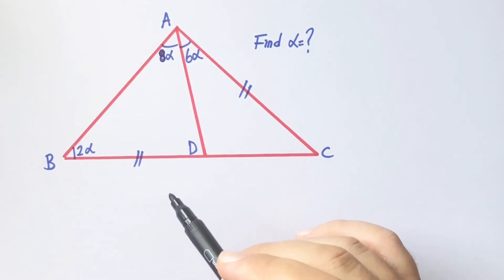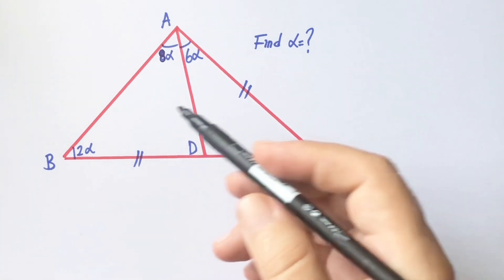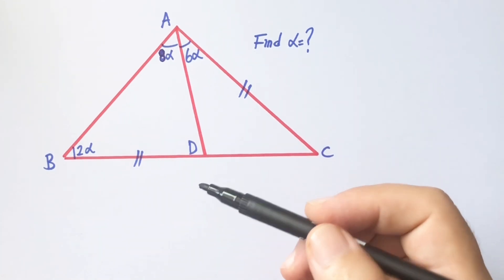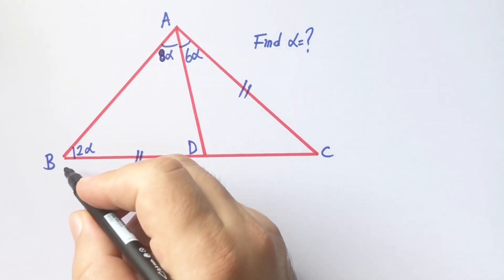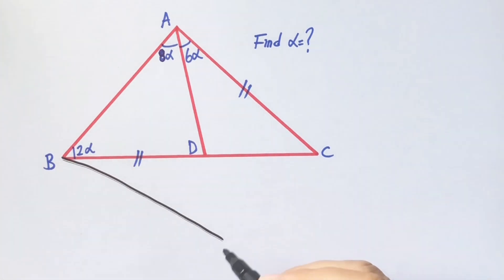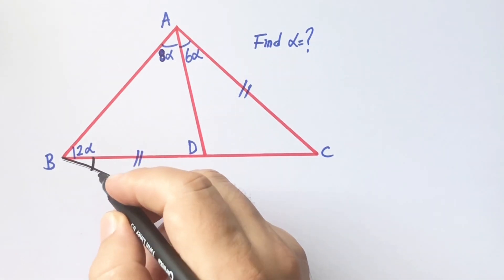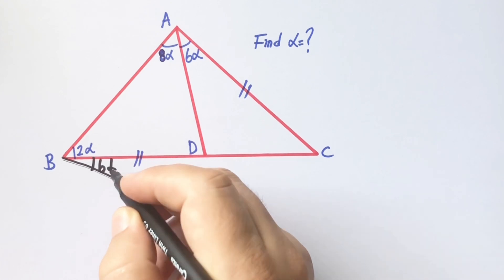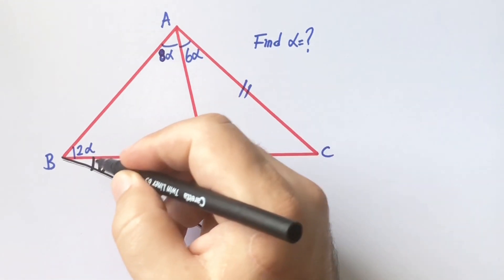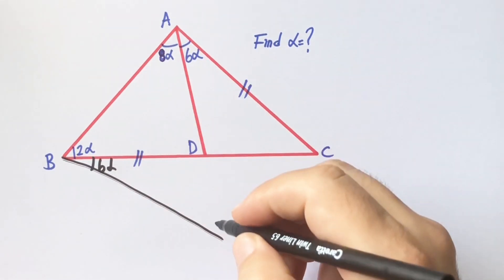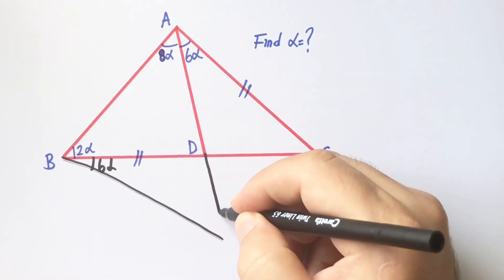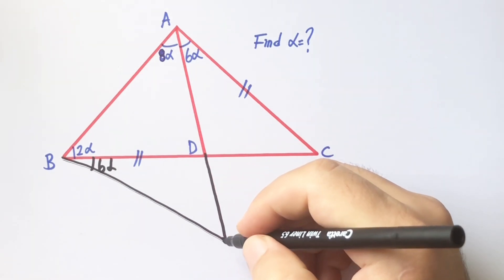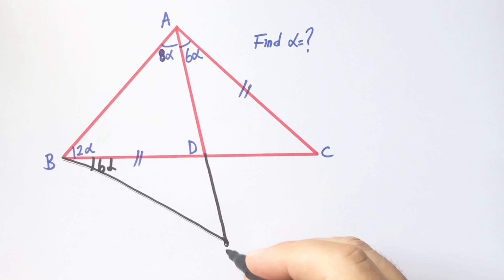We know that in this kind of spatial question we need an equilateral or isosceles triangle. Therefore, I want to create an isosceles triangle, so if we take here 6α like this, we get an isosceles triangle. Let's call here point K.